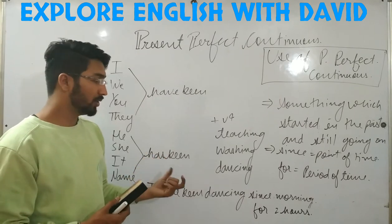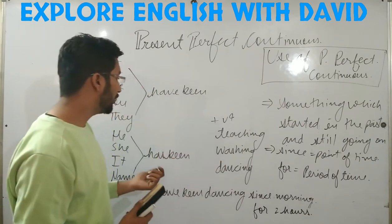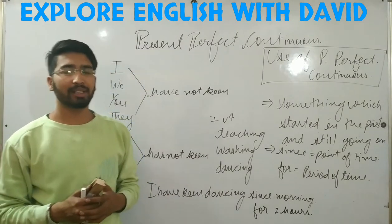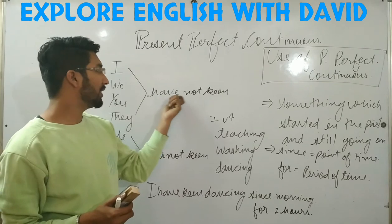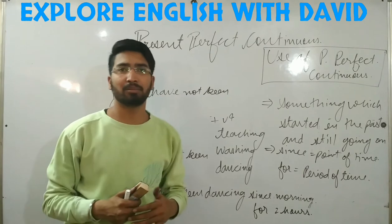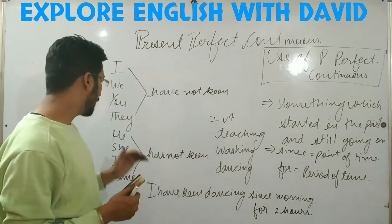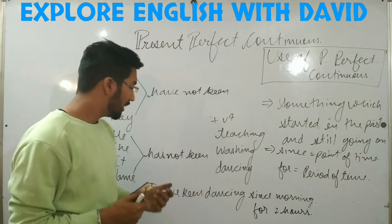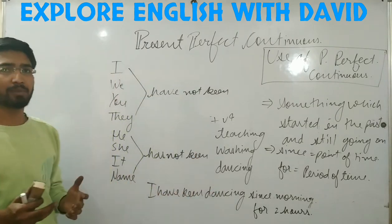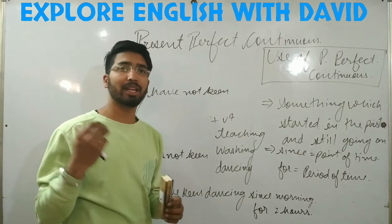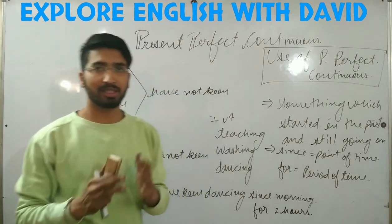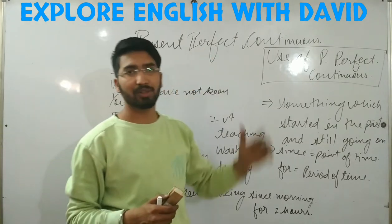We use 'since' or 'for' and we use 'has been' or 'have been' in all these sentences. Now let's understand how we make negative sentences. We have to add 'not' after the helping verb, then 'been', then the fourth form of the verb. For example: I have not been teaching since morning. My father has not been reading the newspaper since morning. My sister has not been learning English since childhood. I have not been dancing since morning.